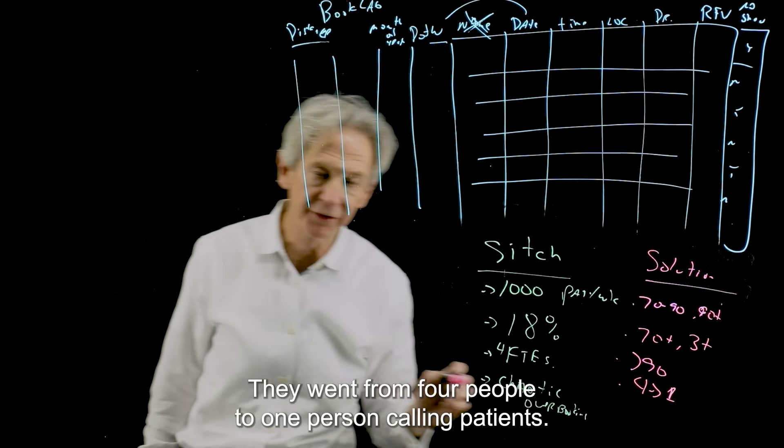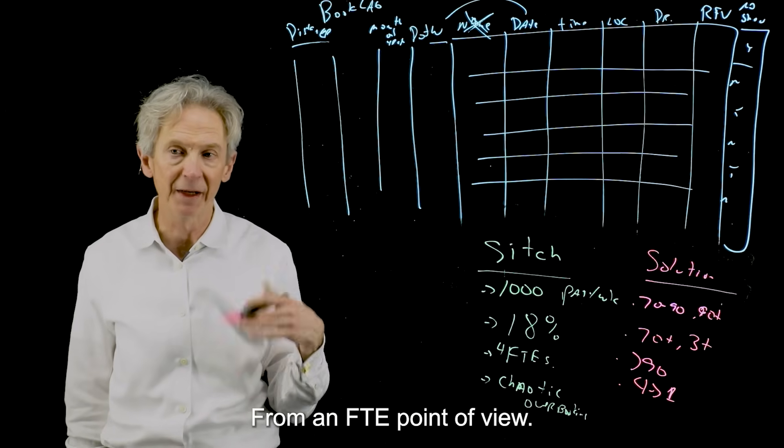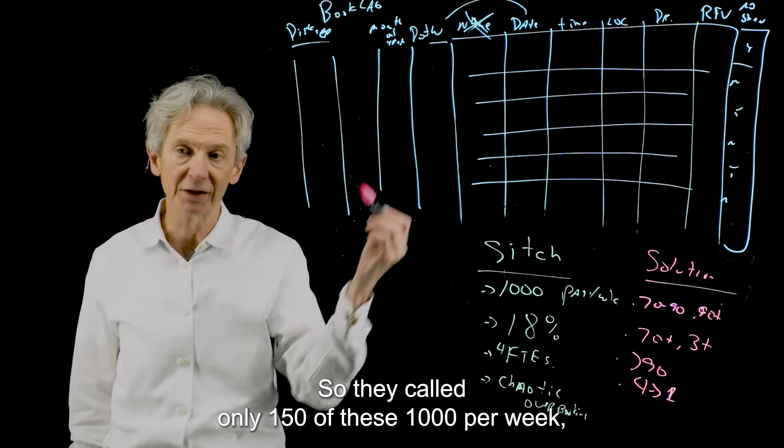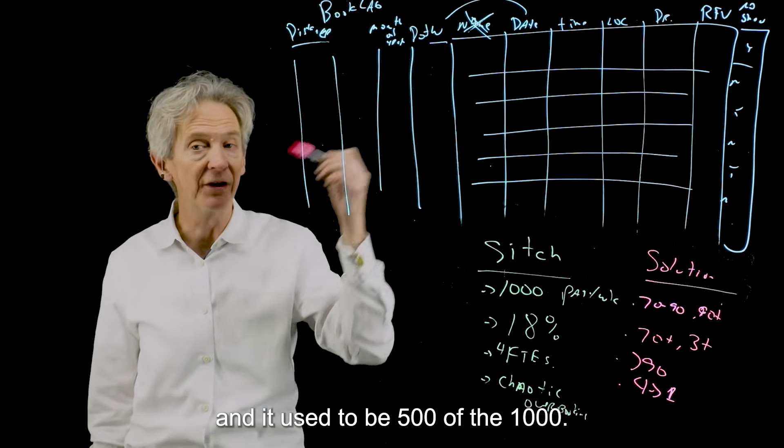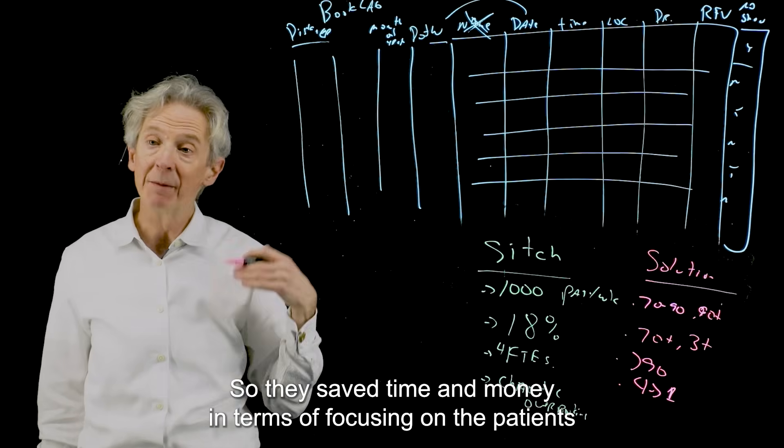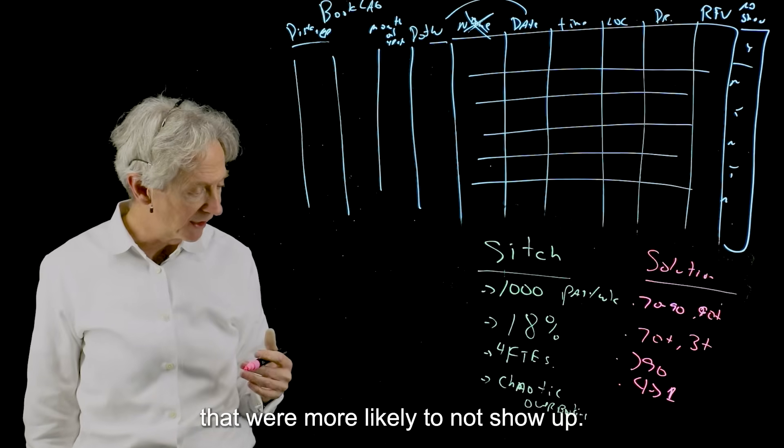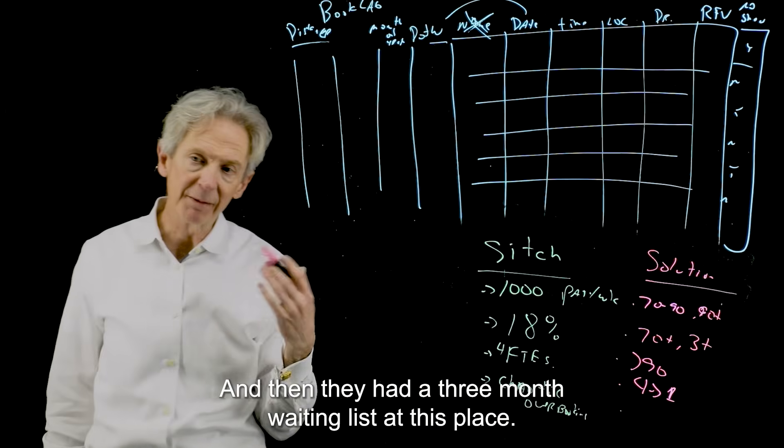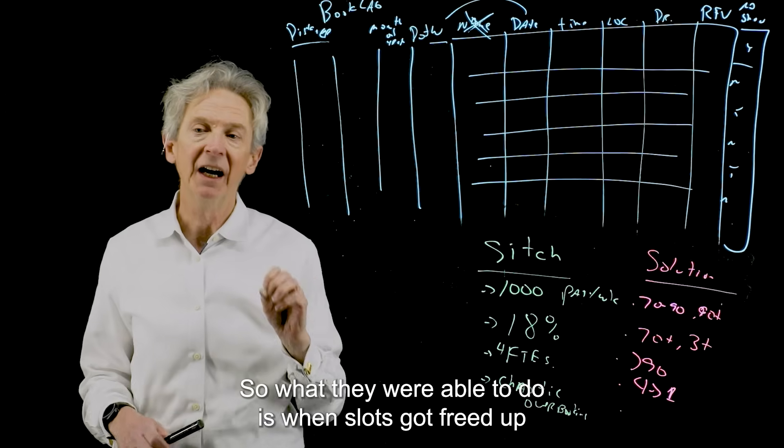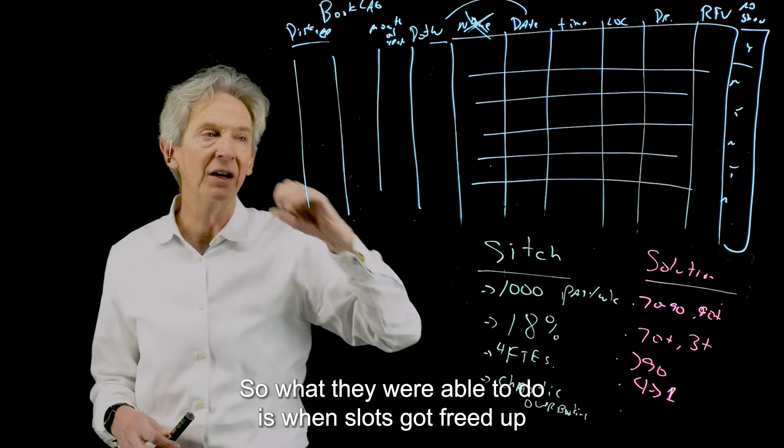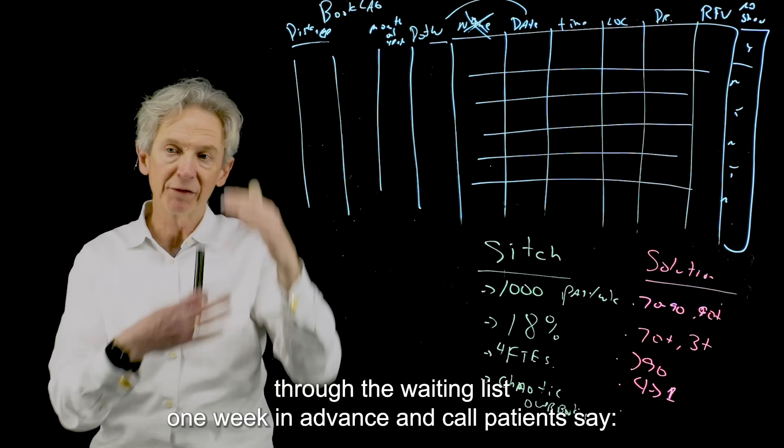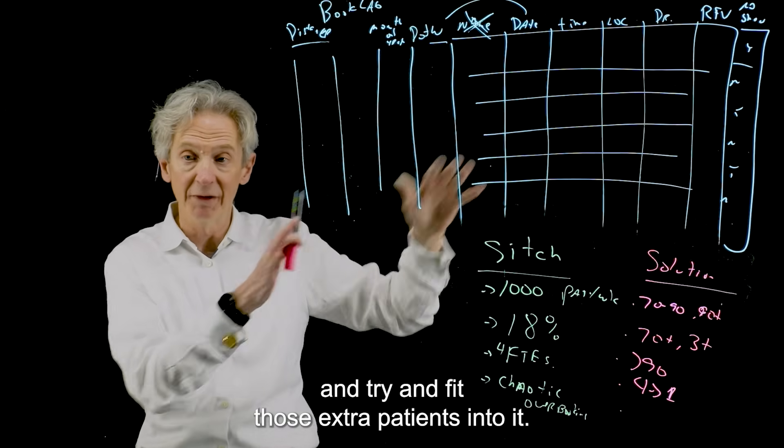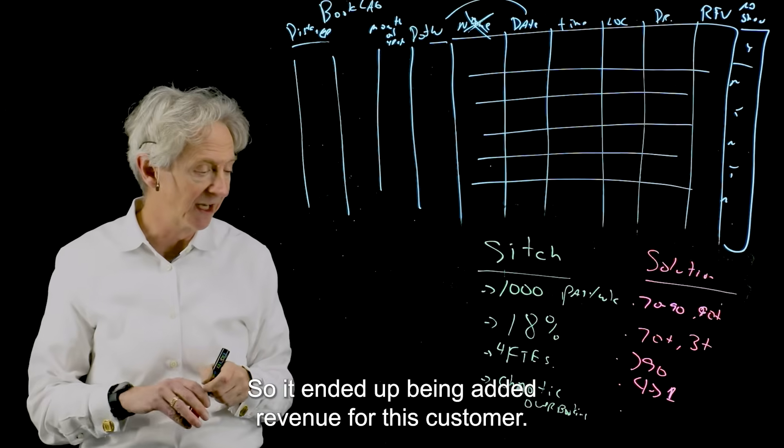They went from four people to one person calling patients. So they saved money from an FTE point of view. They did this because they focused on the patients they called. So they called only 150 of these 1000 per week. And it used to be 500 of the 1000. So they saved time and money in terms of focusing on the patients that were more likely to not show up. And then they had a three month waiting list at this place. So what they were able to do is when slots got freed up or they wanted to overbook at a certain rate, they would work through the waiting list one week in advance and call patients say, Hey, we have an opening or Hey, we have a slot and try and fit those extra patients into it. So it ended up being added revenue for this customer.